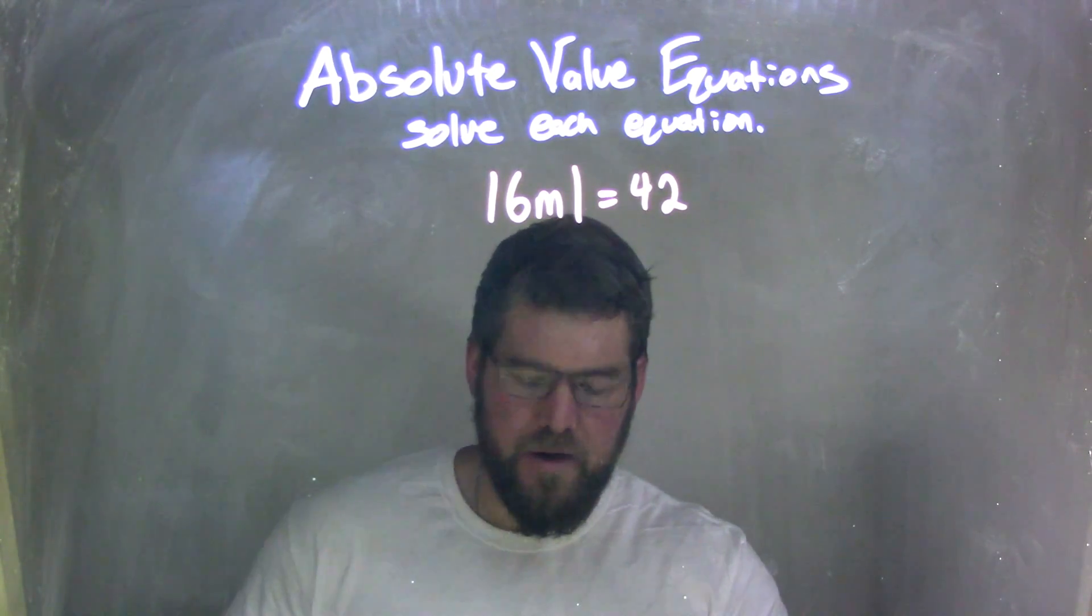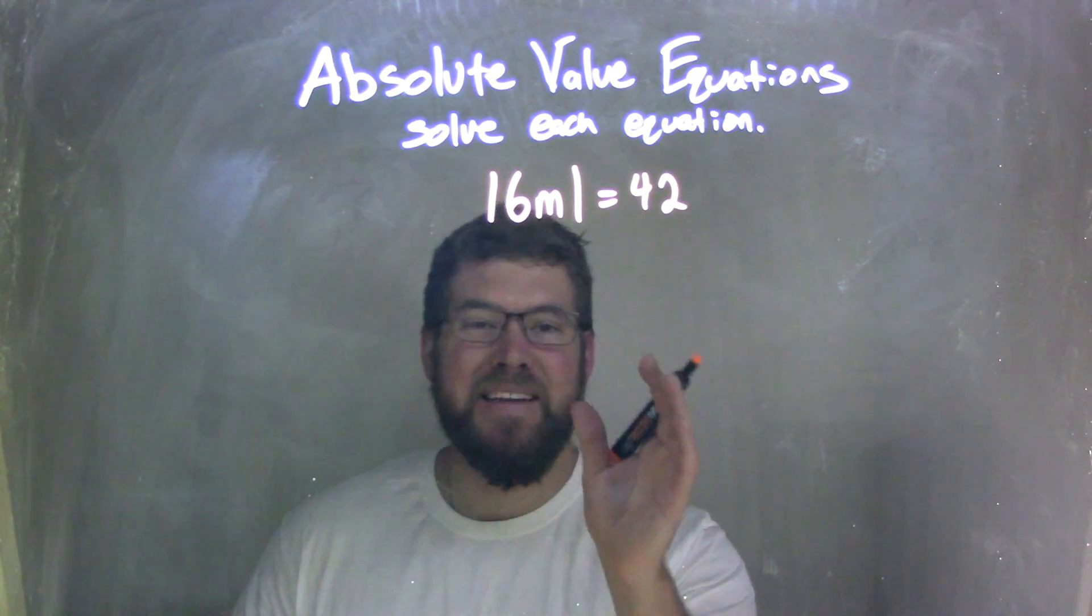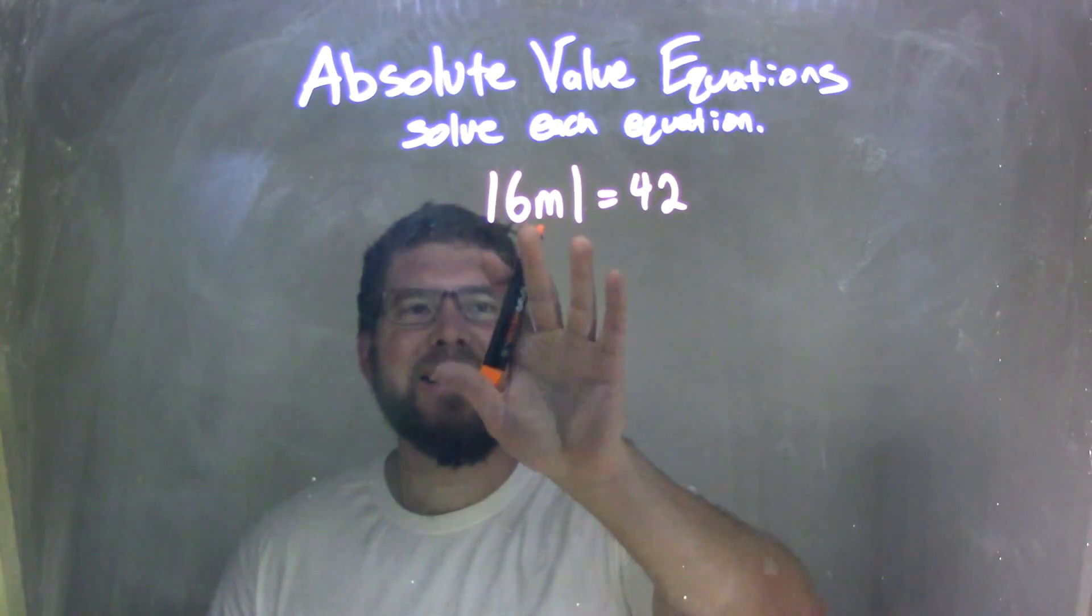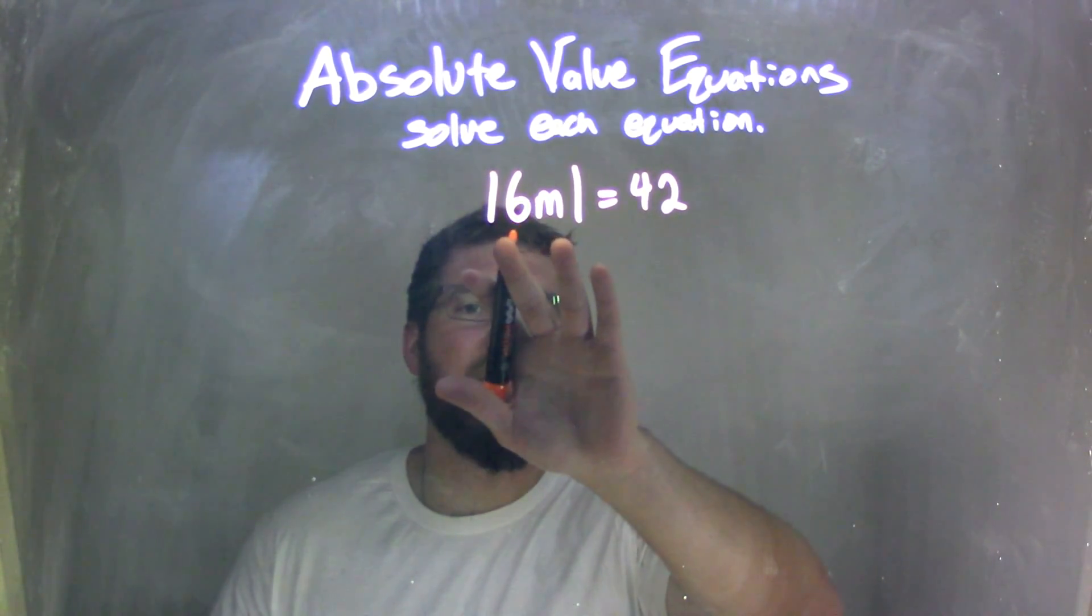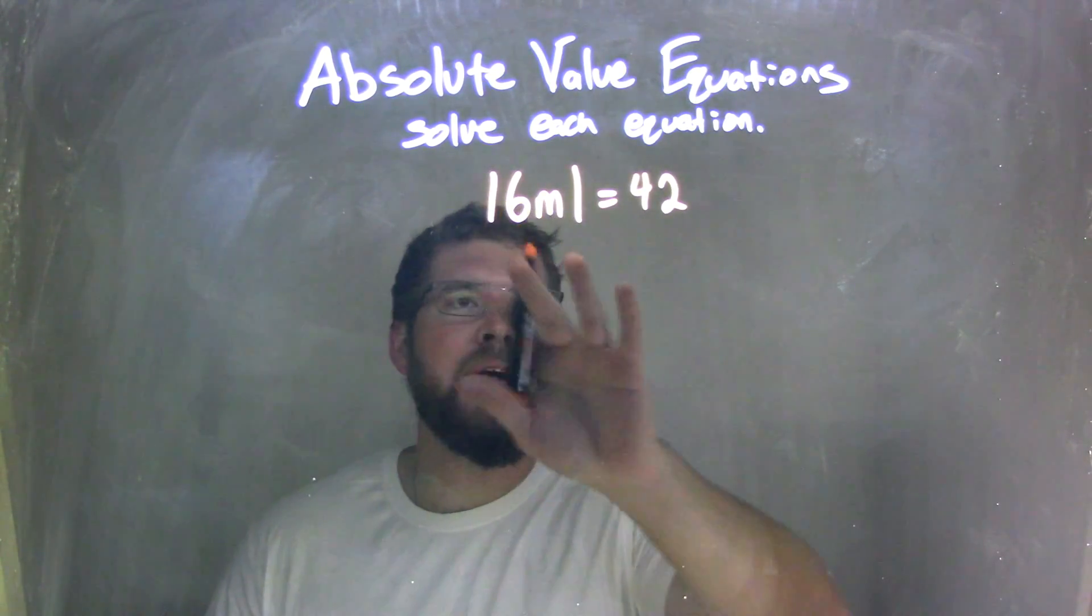Well, our first step here, and for a lot of these, it's already done for us, is we need to isolate the absolute value, which we have. We've isolated the absolute value, it's all by itself here. So the absolute value is all by itself, equals 42.